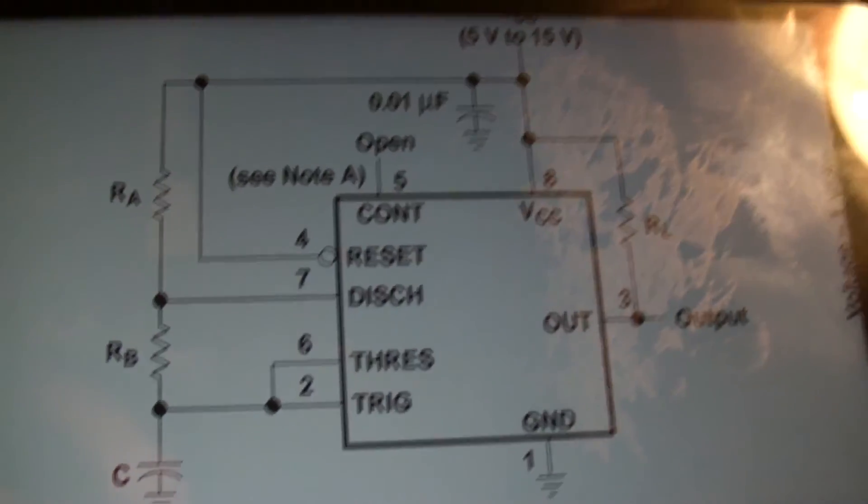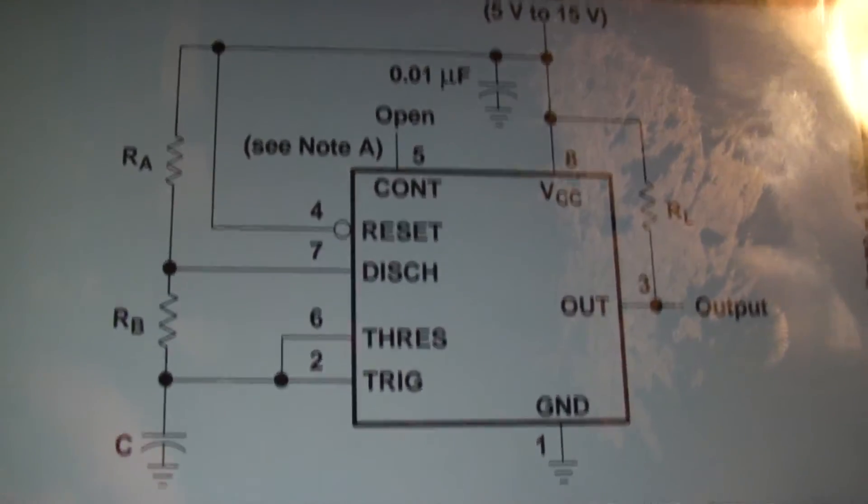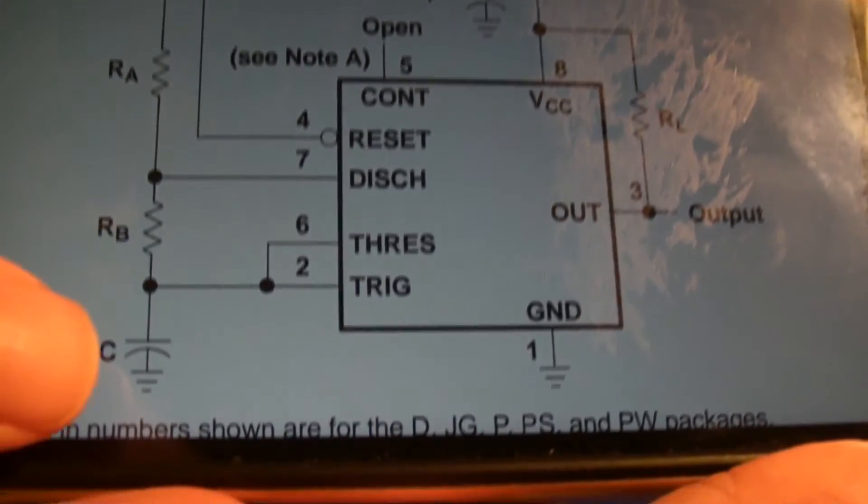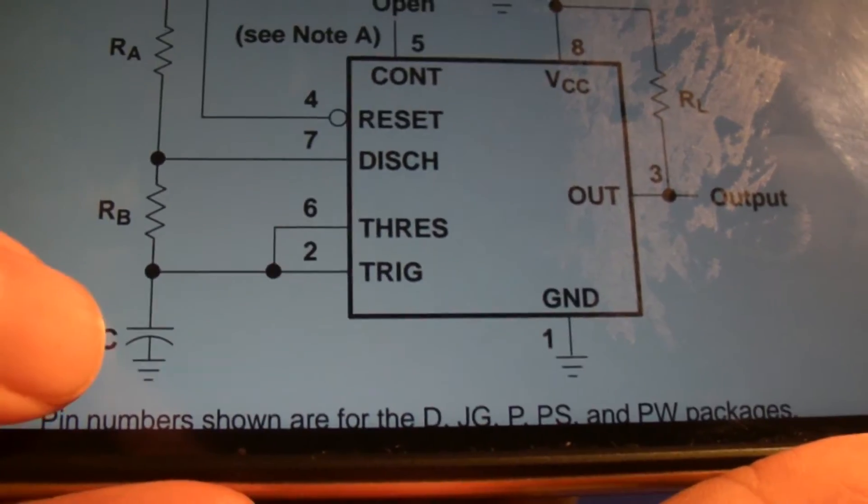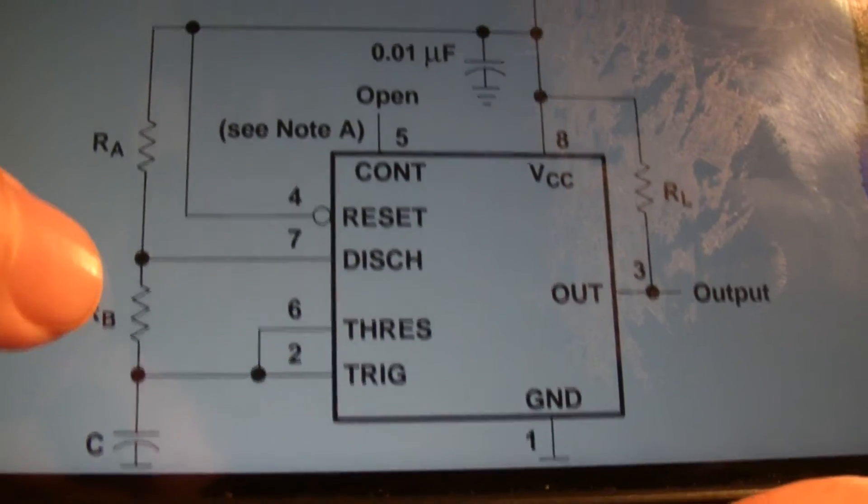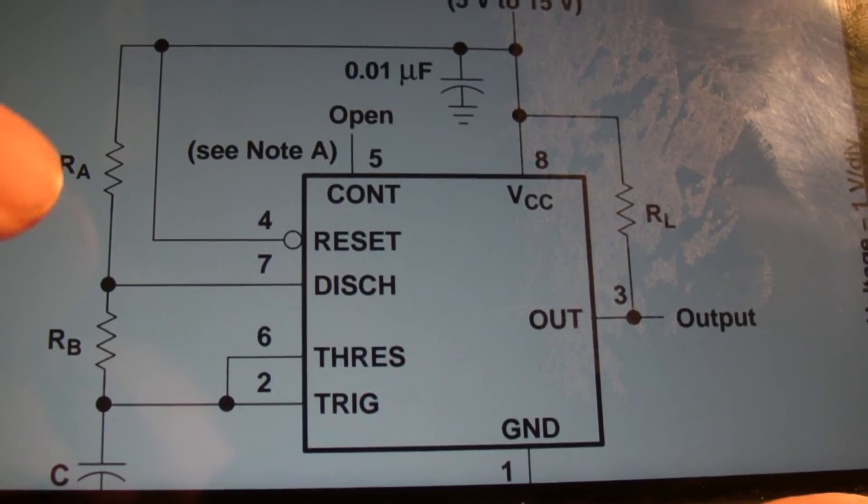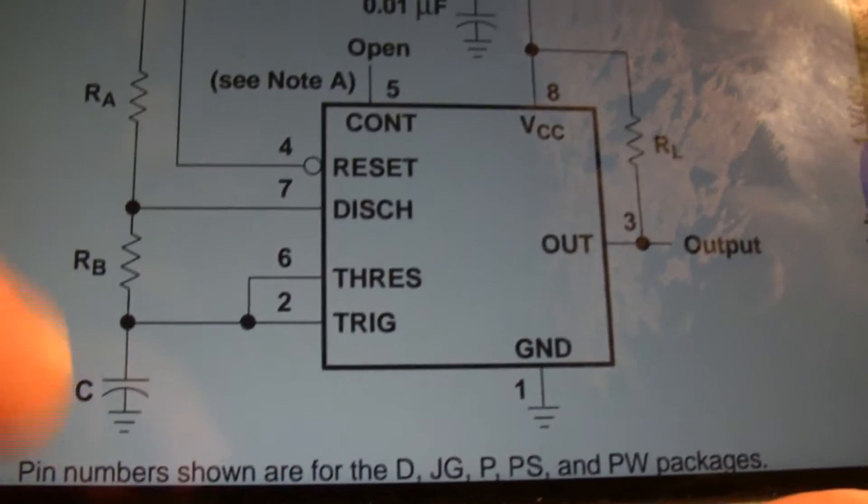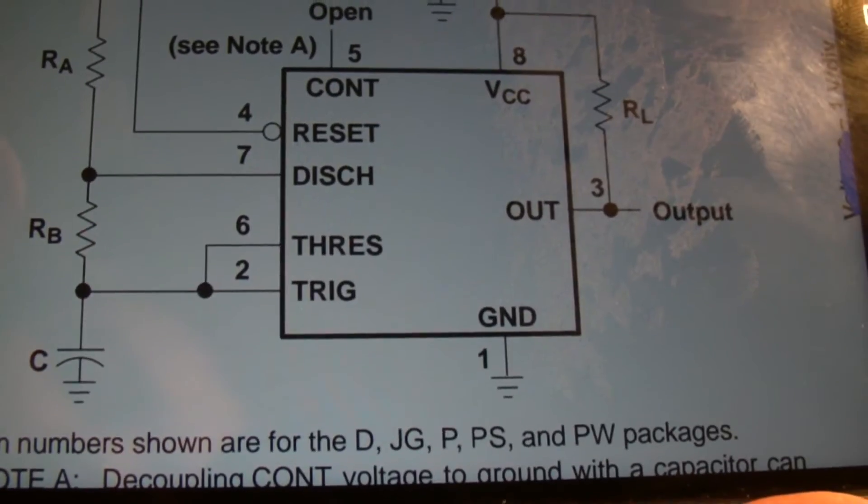So what we have on this circuit is the chip for the most part. We've got a few resistors and we've got a capacitor. The main working component is this capacitor right here which is connected to ground and this trigger and threshold. What we've got is these two resistors here, resistor A and resistor B, and the capacitor work together to determine the timing of the circuit.